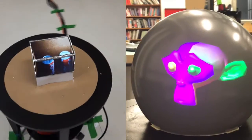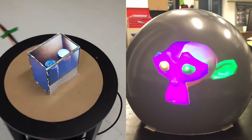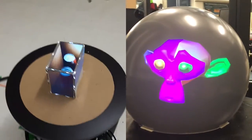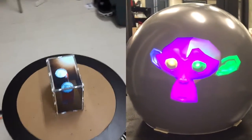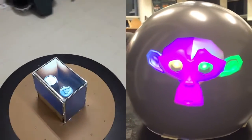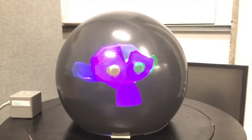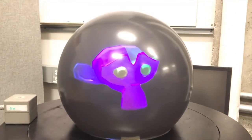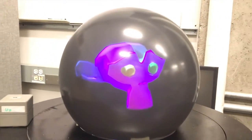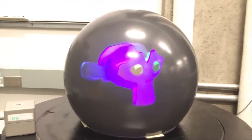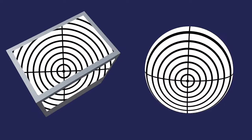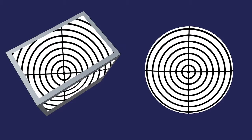For the CHI demo, we will bring a spherical and cubic display for attendees to try out. Attendees will be able to experience head-tracked displays and try the novel visual calibration approach described in our CHI paper.